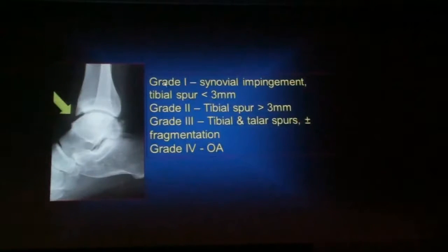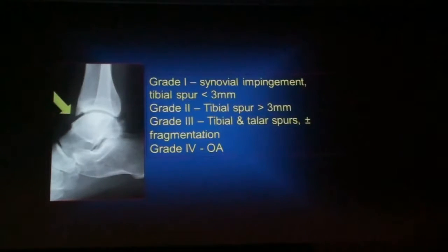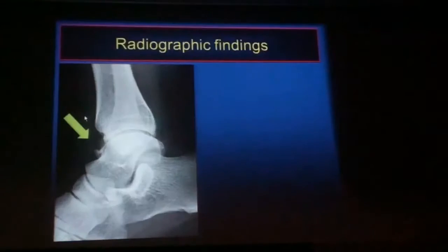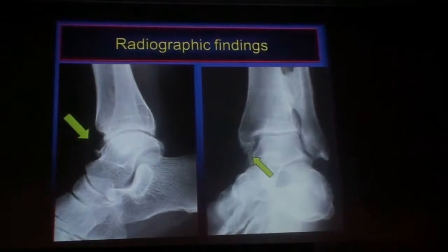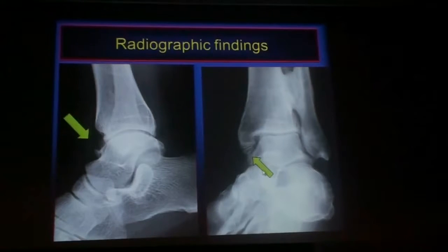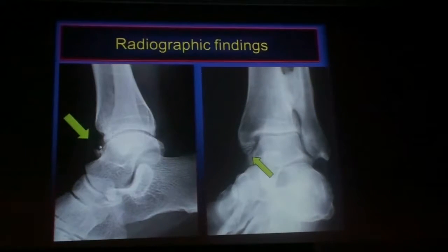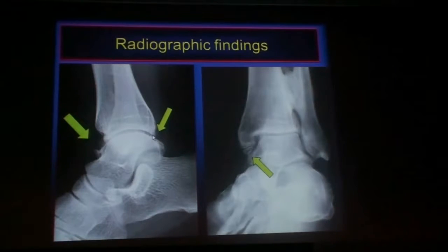We can grade anterior impingement: Grade 1 is a tibial impingement with tiny tibial spurs. Grade 2 has larger tibial spurs greater than 3 millimeters. Grade 3 is when you have both tibial and talar spurs with or without fragmentation. Grade 4 is the final finding of osteoarthritis. Keep in mind that a lot of times the anterior impingement is better seen on oblique ankle images or sometimes even on lateral radiographs, and it is often more medially located. I also frequently find posterior osteophytes and posterior impingement at the same time as anterior impingement.